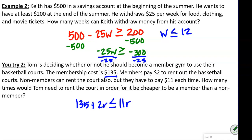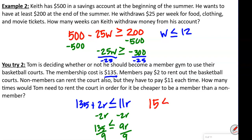We subtract 2R from both sides, giving us 135 is less than or equal to 9R. Divide both sides by 9. Remember, with inequalities we treat them just like an equal sign unless we're dividing or multiplying by a negative number — that's when we change the sign. So 15 is less than or equal to R, and flipping it: R is greater than or equal to 15.